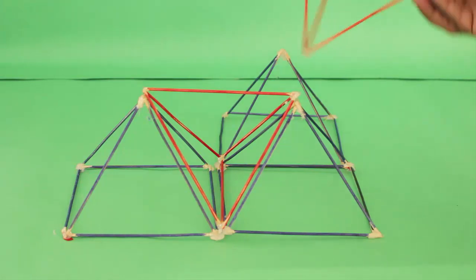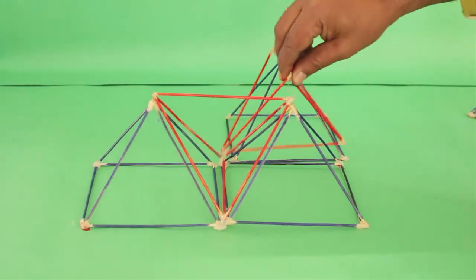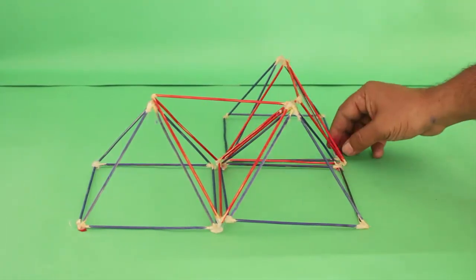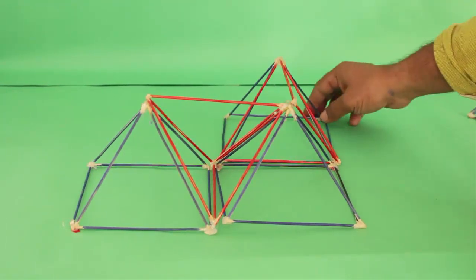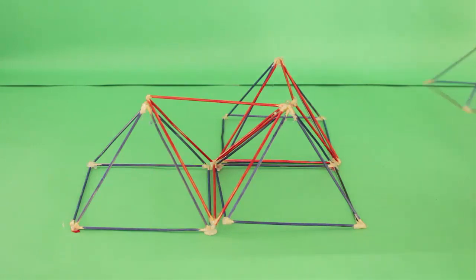Once again we will snug fit a red tetrahedron in the cavity between the second and the third square pyramid. Then we will place a fourth square pyramid.